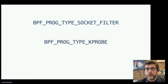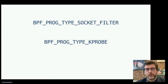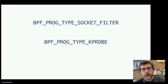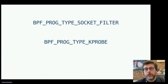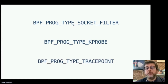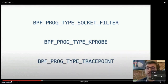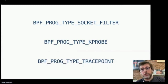BPF_PROG_TYPE_KPROBE allows you to dynamically attach to execution points within the kernel, running your code both before and after a function executes, allowing you to instrument any function on the fly. This is extremely powerful, but because it's dynamic, it doesn't provide a stable interface — a program that works on one kernel version might not work on another. In comparison, BPF_PROG_TYPE_TRACEPOINT attaches to trace points that are guaranteed to be stable, so your programs will work even with new kernel versions.